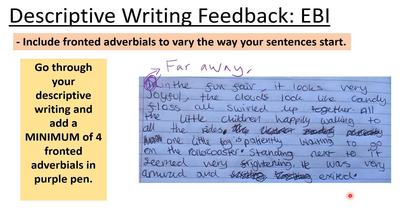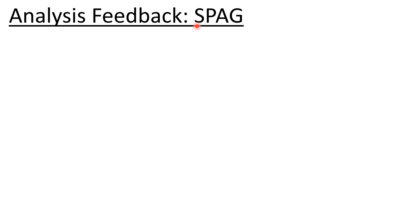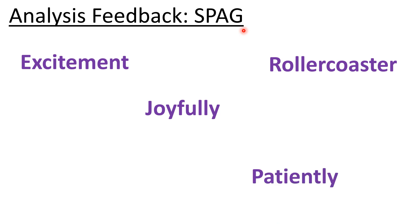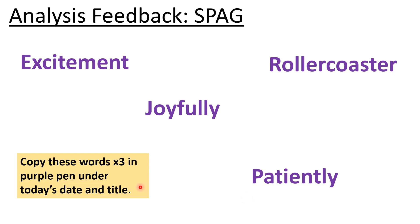Okay, so you should have added your fronted adverbials - there should be four in purple pen. Now it's time to look at some SPAG - spelling, punctuation and grammar. There were some spelling words that I want us to correct: excitement, joyfully, roller coaster, patiently. Joyfully and patiently could actually be used as fronted adverbials too. What I would like you to do is under today's date and title, copy each of these words three times - copy 'excitement' three times, 'joyfully' three times, 'roller coaster' three times and 'patiently' three times. Pause the video and come back when you have copied those four words in purple pen three times.